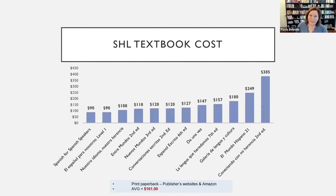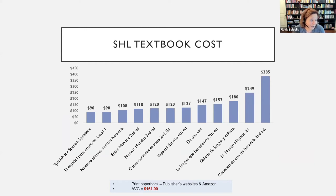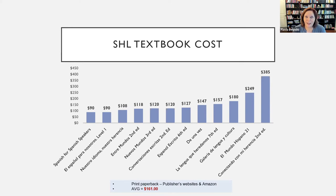So we checked some prices. We visited publisher websites and Amazon, because some publishers didn't have the information, and we gathered the price of the print version of these textbooks. As you can see, the average cost — el costo promedio — is $161, perhaps for one semester. These are 12 of the most well-known books in Heritage Spanish. I'd like to know if anyone has experience with the cost of the books you're using, if they're different from this group. Did you know how expensive these books are?